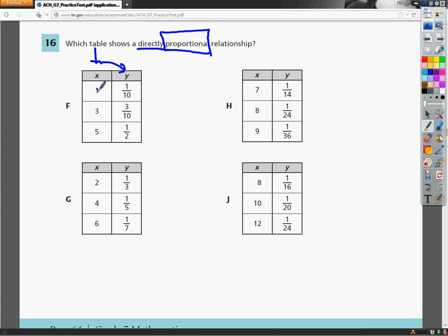So whatever I go from 1 to 1 tenth, I need to do the same thing to go from 3 to 3 tenths and 5 to 1 half. When I talked about proportions before, they're fractions, so I can set up a nice division to figure it out.